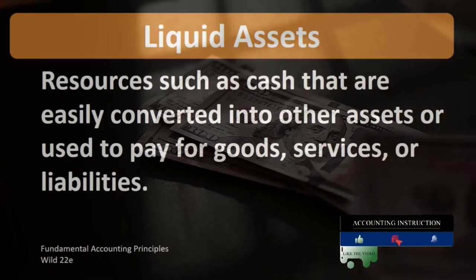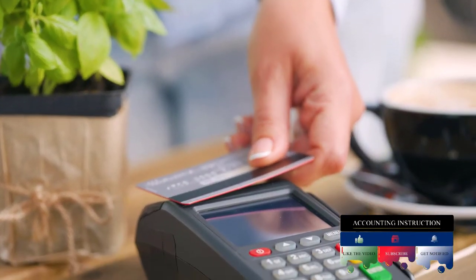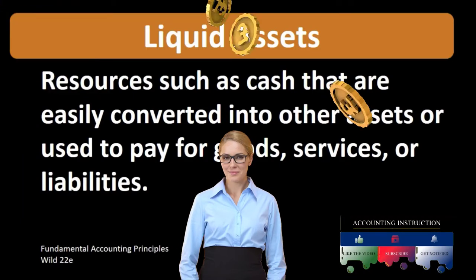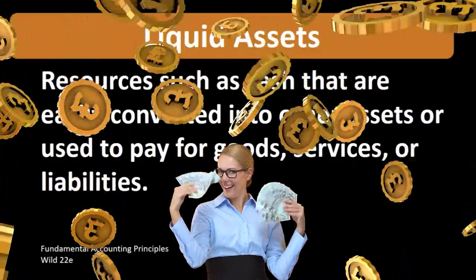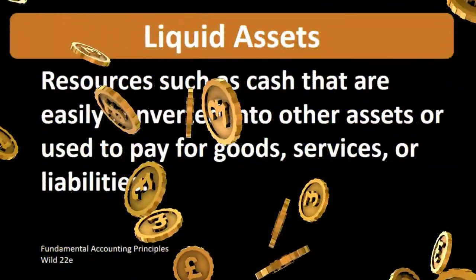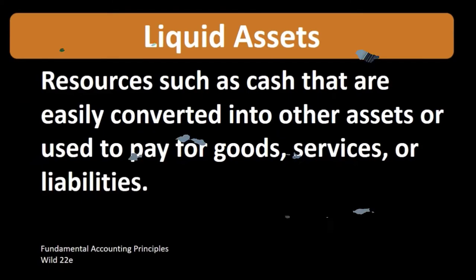When we're thinking about liquid assets, we're thinking about the idea of paying for goods and services or liabilities with those assets and how easy it would be to do that. How easily can we convert the asset we have to something that can be expended for goods or services or to pay off a liability. Oftentimes it's easy to think about that in terms of the relationship to cash — how close to cash is a particular asset, cash generally being the most liquid asset, the thing we can use most readily to pay for goods and services and to pay off liabilities.